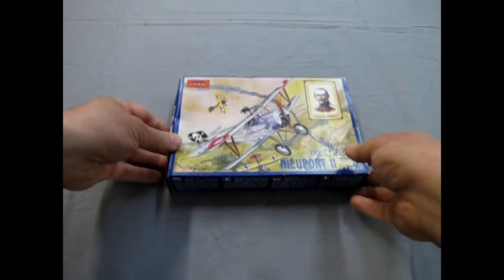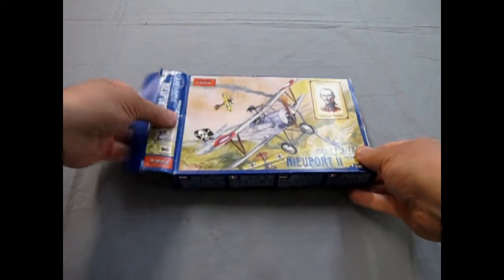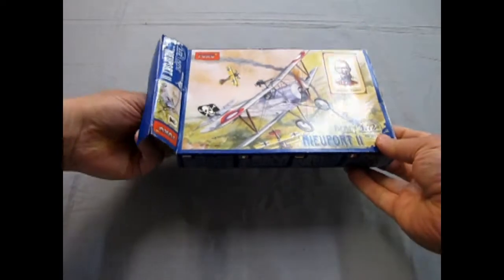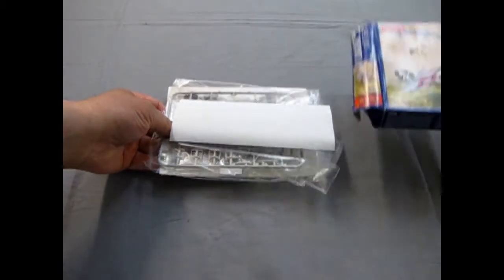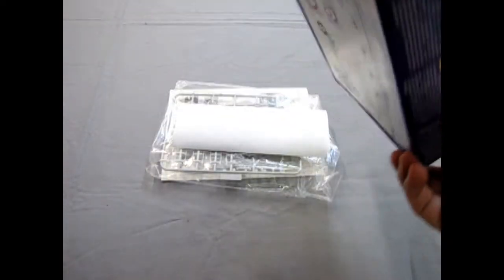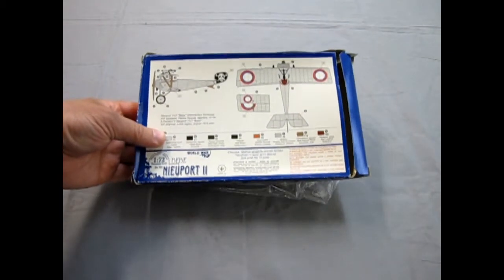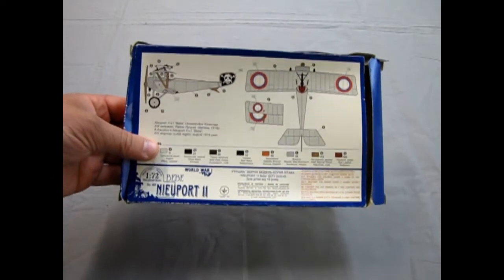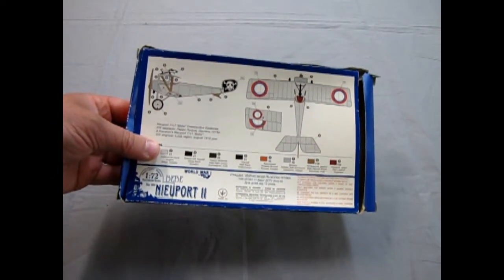So let's do that. Now it's interesting, as I was searching up this model on the internet, I actually found out that Eastern Express has taken over this model. So that one might be more available than this one. Actually, if we look on the back of the box to begin with, they show the markings for the Russian pilot on this model kit.